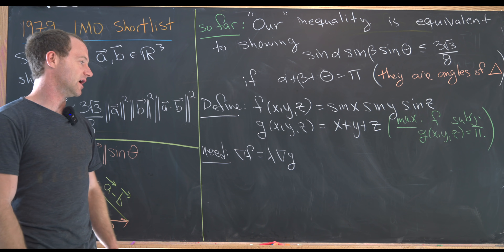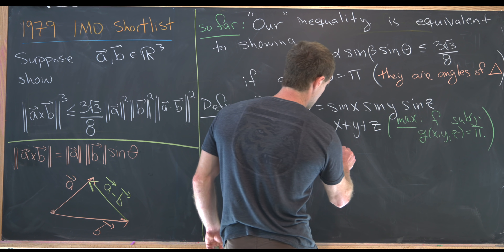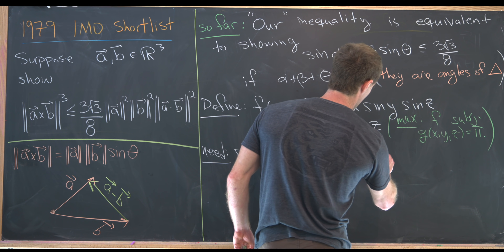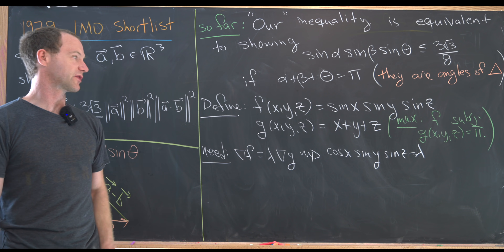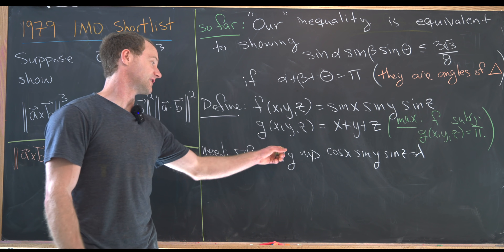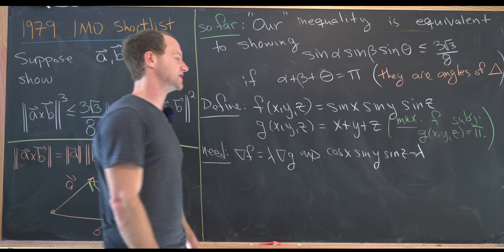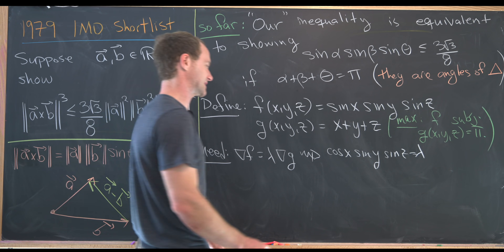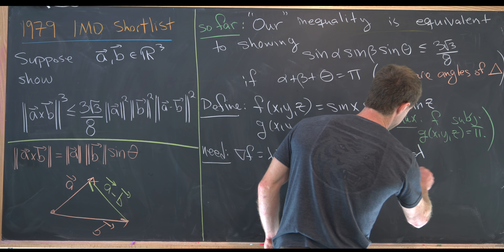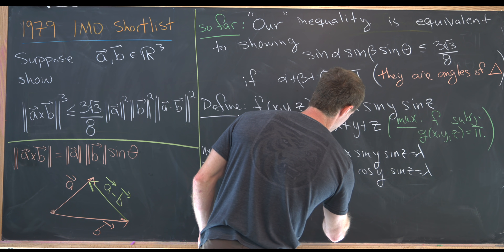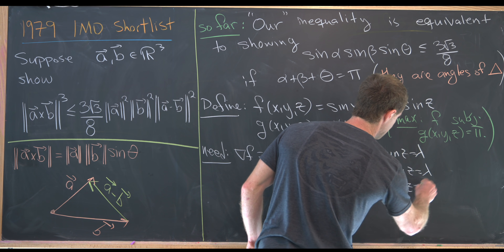That's really a system of three equations. Taking the partial derivatives, we get: cosine x times sine y times sine z equals lambda; sine x times cosine y times sine z equals lambda; and sine x times sine y times cosine z equals lambda.